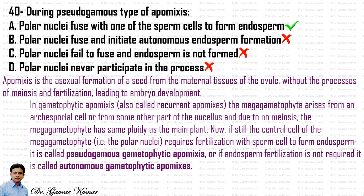If endosperm fertilization is not required, it is called autonomous gametophytic apomixis. Hence the answer is that during pseudogamous type of apomixis, polar nuclei fuse with one of the sperm cells to form endosperm — that is, fertilization does occur.